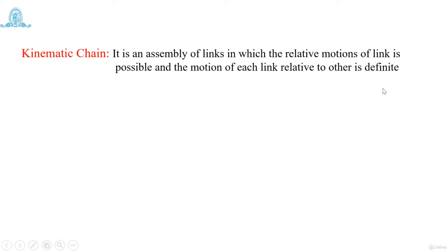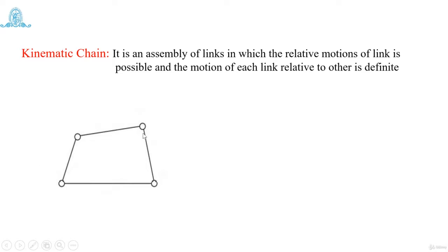In this figure, you can see link number one, link number two, link number three, and link number four assembled together with pin joints, so that they have relative motion between them. Once you give motion to link number one, link number two will rotate; then link number three will rotate; and accordingly link number four will also have a definite motion. There is a relative motion of the links possible — once you give motion to one link, others will rotate or translate in a definite direction. That is a kinematic chain.